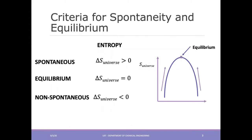From the Clausius inequality, recall that the criterion for spontaneity and equilibrium is entropy. For a spontaneous process in isolated systems, the entropy of the universe is increasing until it reaches a maximum, at which point delta S of the universe becomes zero — meaning the system is at equilibrium. For a non-spontaneous process, delta S of the universe is less than zero. So the use of entropy as a criterion for spontaneity can only be applied to isolated systems.